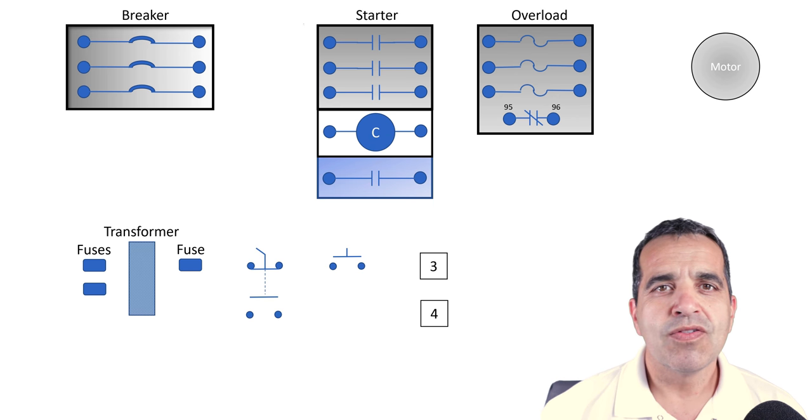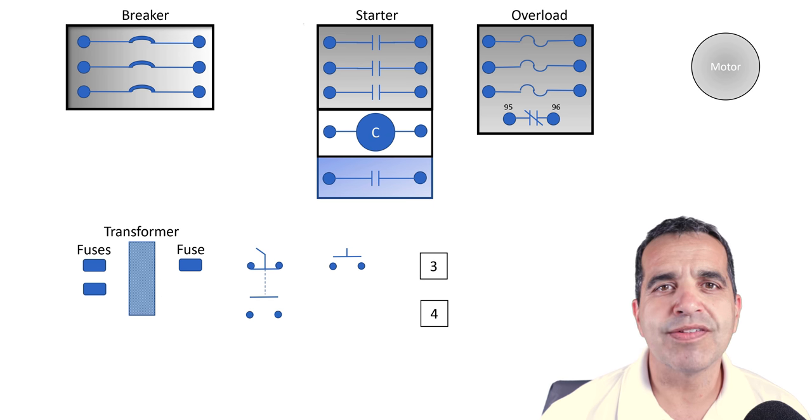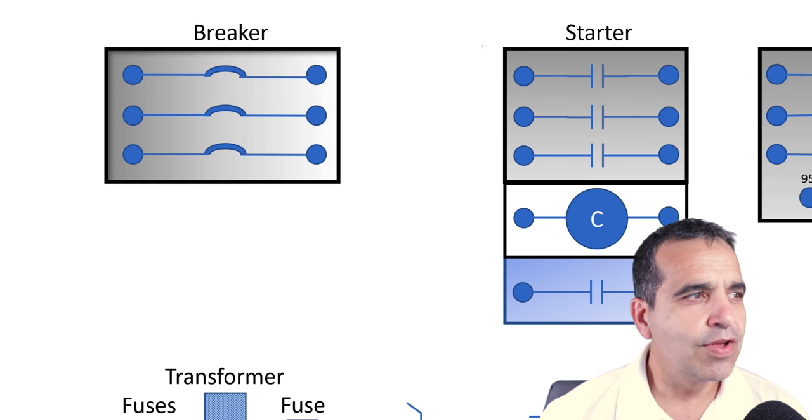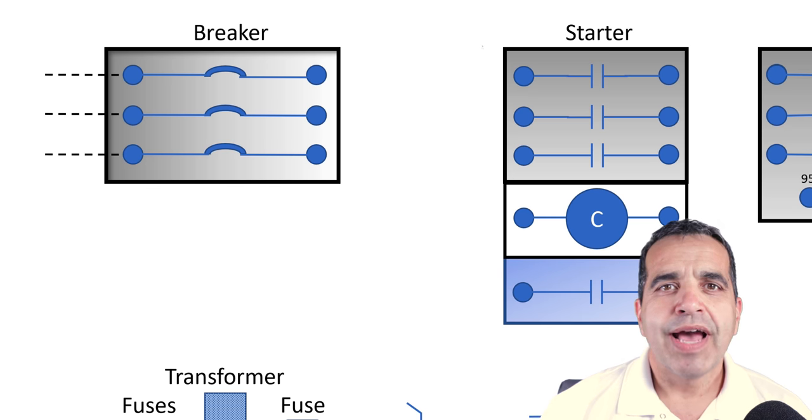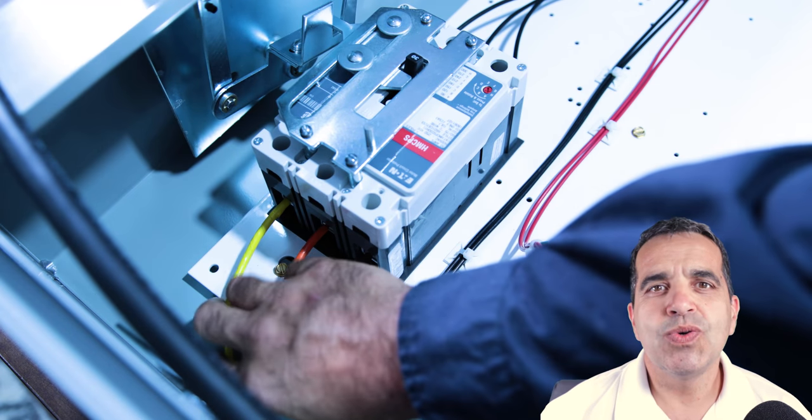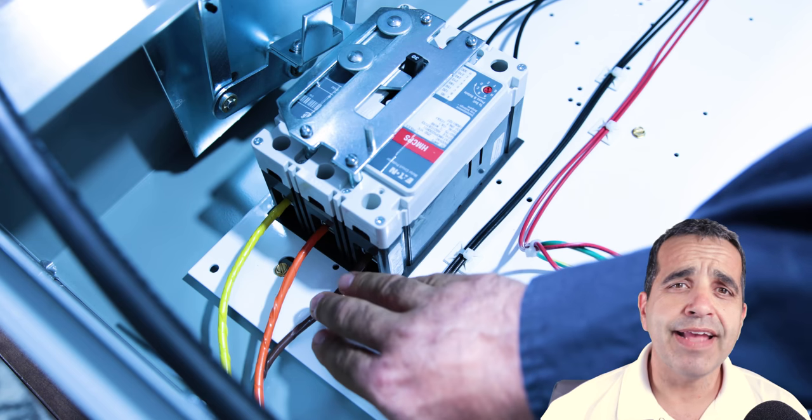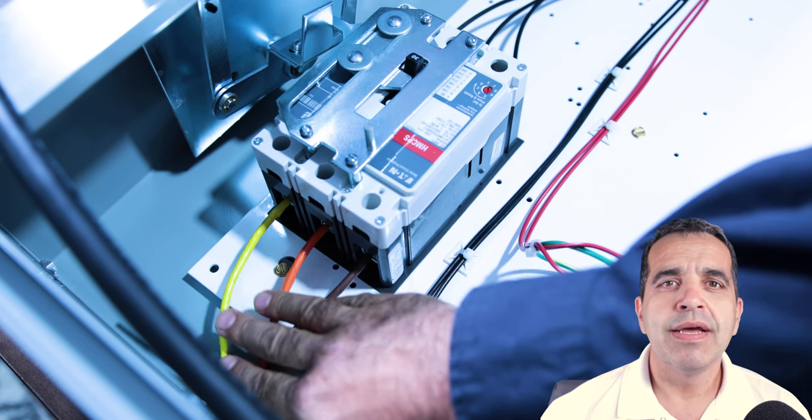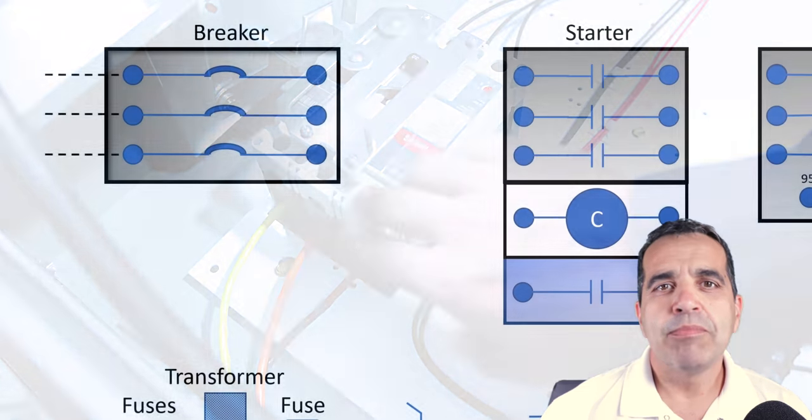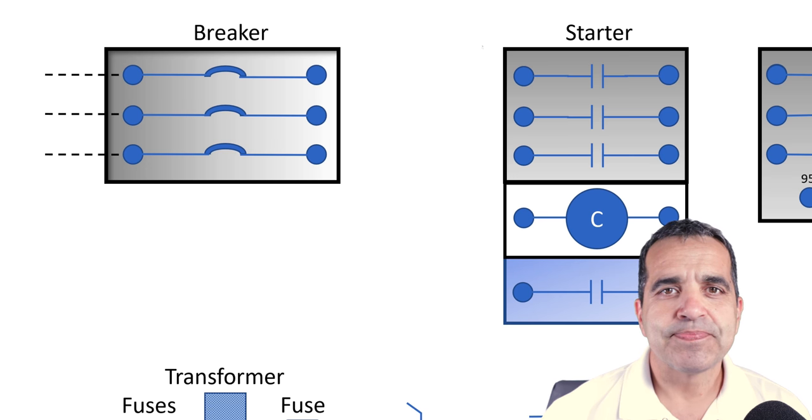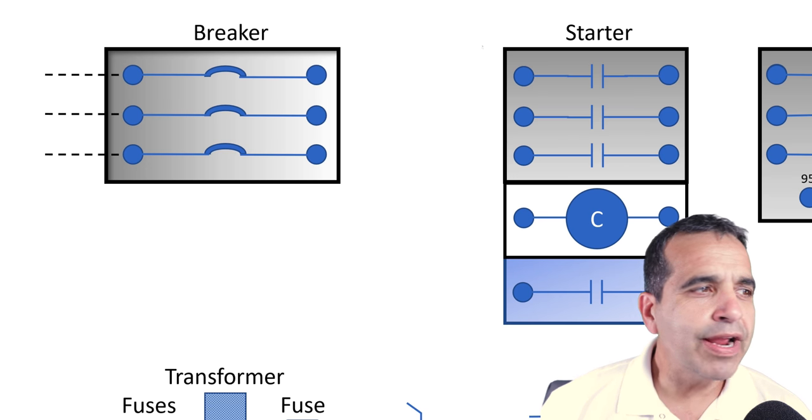First of all, we have our infeed to the breaker. This is our line voltage. In this particular case, it's brown, orange, yellow that is feeding the main breaker of this pump panel.